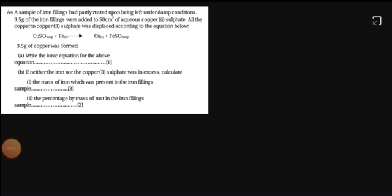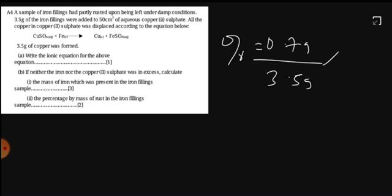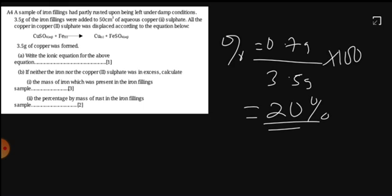Part C says the percentage by mass of rust in the iron filings. You know that the percentage by mass is equal to the mass present over total mass. We know that the mass of rust present in the iron filings is 0.7 grams, and the total mass is 3.5 grams. We multiply by 100. That is going to give us 20% of rust.